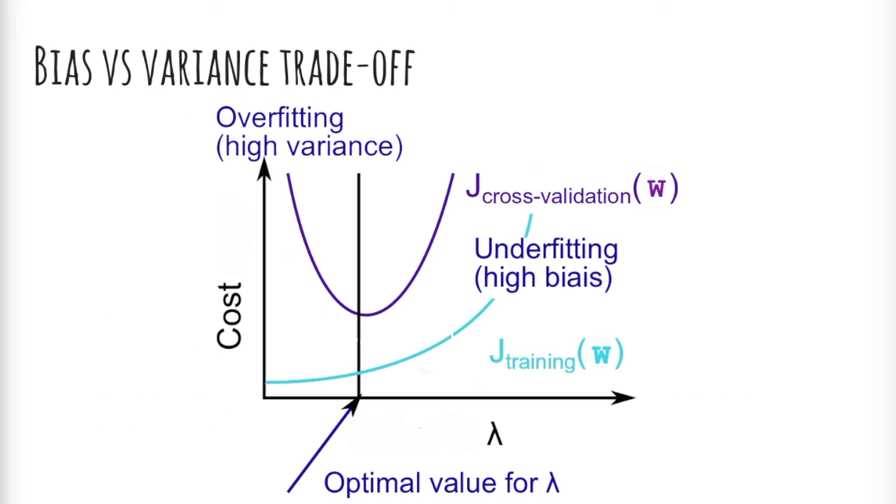To find the optimum value of lambda, we can plot the training cost function and validation cost function over different values of lambda. Accuracy or similar metric could be plotted as well. When lambda is low, the training cost function is very low and training accuracy is high, but the cross-validation cost function tends to be high as the model fits well only to the training set. The aim for the optimization is to minimize cross-validation cost function.